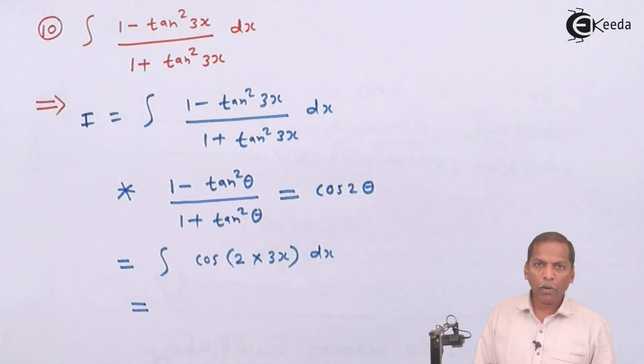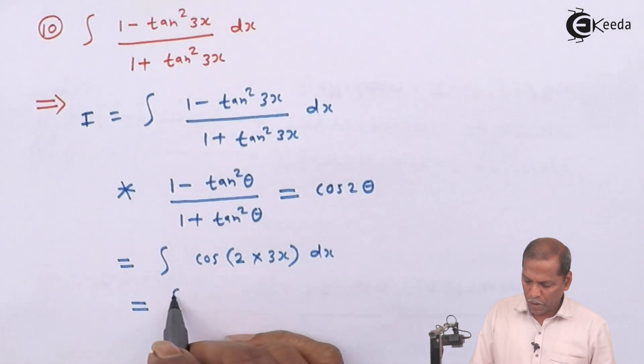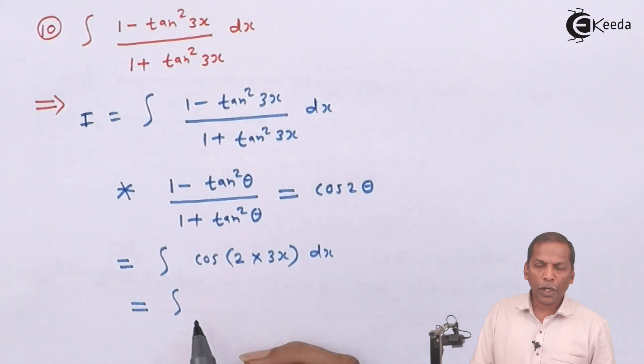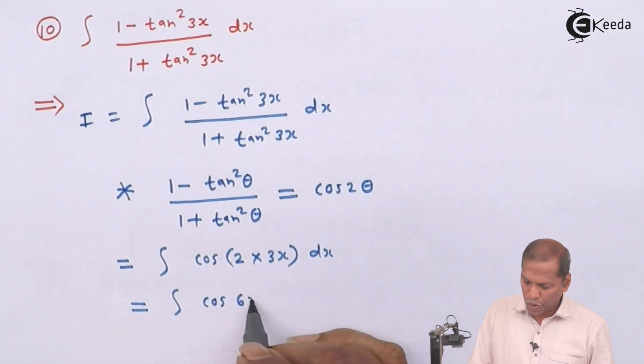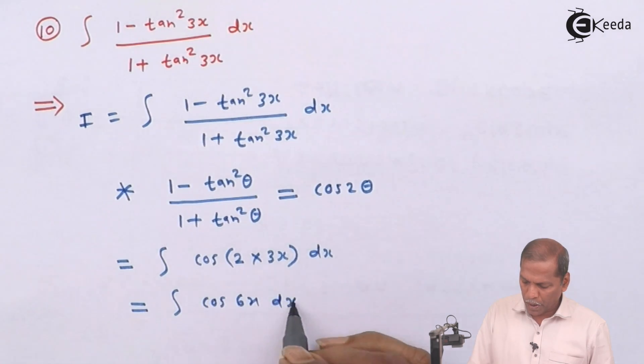So that equal to integral cos of 2 into 3x gives 6x. So here we get integral cos of 6x dx.